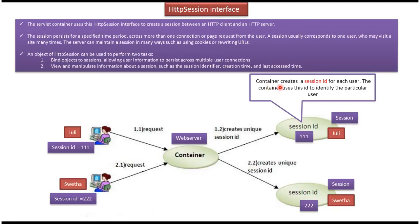The container creates a session ID for each user. For Julie, the container created session ID 111; for Svaita, the container created session ID 222. The container uses this ID to identify the particular user. If the session ID is 111, the container will know the request is coming from Julie. If the session ID is 222, the container will know the request is coming from Svaita.